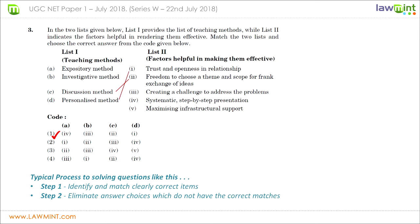In question number three we have two lists: list one has teaching methods and list two has factors helpful in making them effective, and we must match them. A typical process is to identify and match the clearly correct items first, then eliminate answer choices without those matches. Looking at list one, C — the discussion method — matches with two in list two, meaning discussion method involves freedom to choose a theme and scope for frank exchange of ideas. Only options one and four have C matching to two, so we can eliminate two and three.